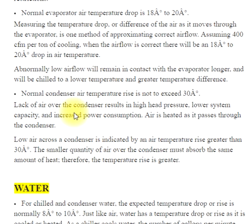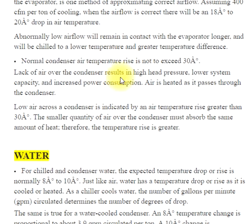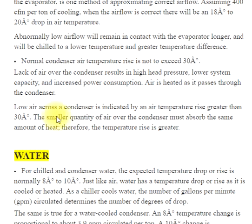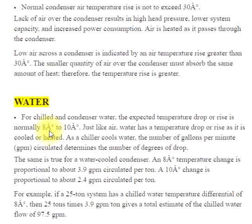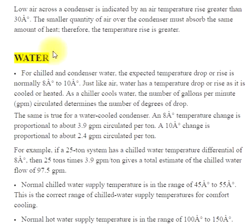Normal condenser air temperature rise should not exceed 30°. Lack of air over the condenser results in high head pressure, lower system capacity, and increased power consumption. Air is heated as it passes through the condenser. Low airflow across a condenser is indicated by an air temperature rise greater than 30°, since the smaller quantity of air must absorb the same amount of heat, causing a greater temperature rise.